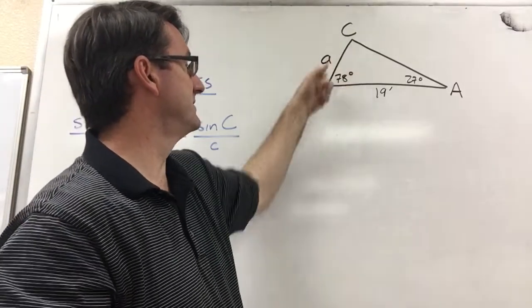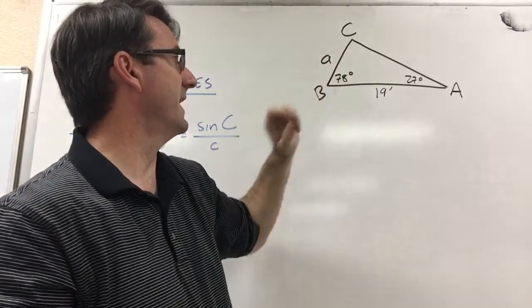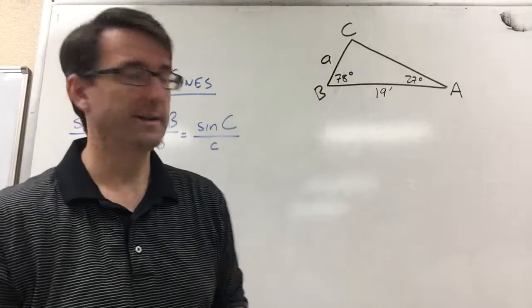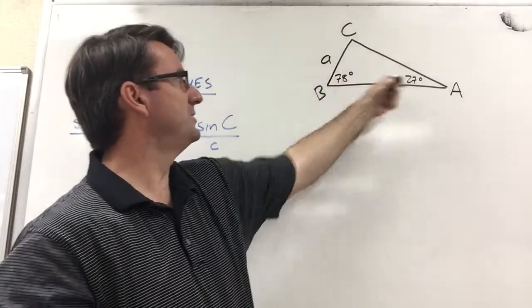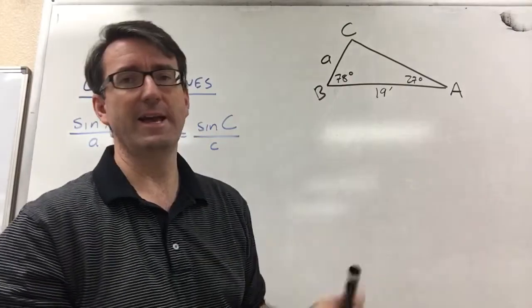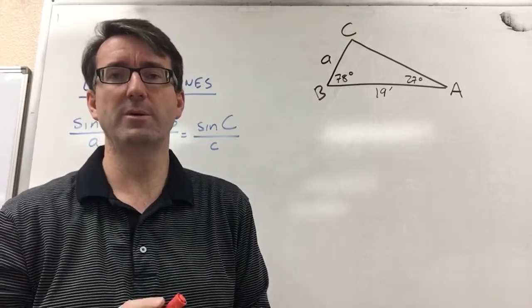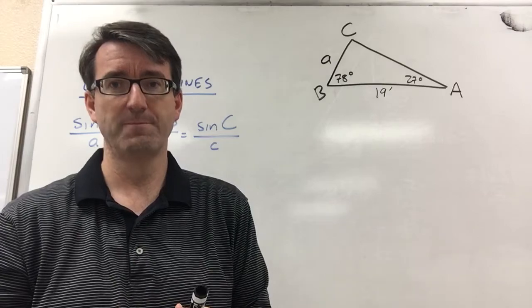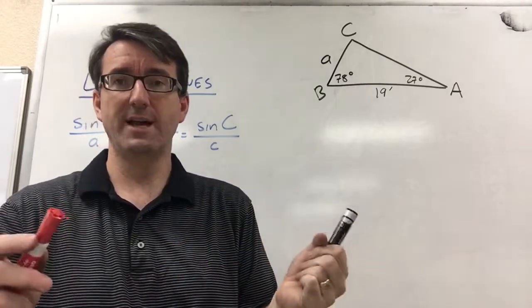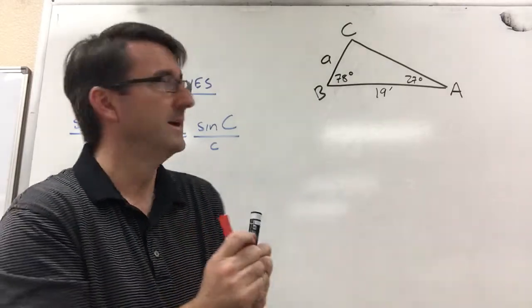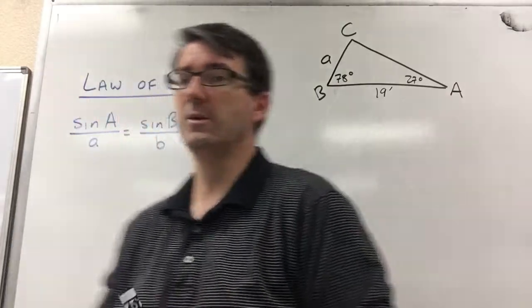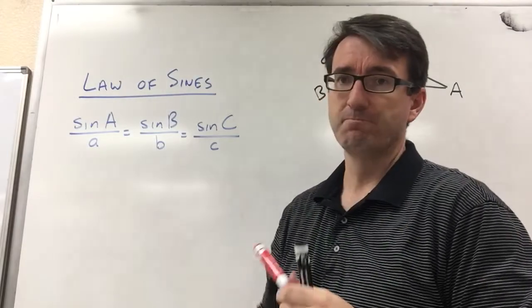All right, now notice that side A right here that I've labeled A is what we're trying to find in this problem. We know two angles and a side. Whenever you know two angles and a side, or if you know two sides and some angle other than the one right in between the two sides, then you're going to use the law of sines.